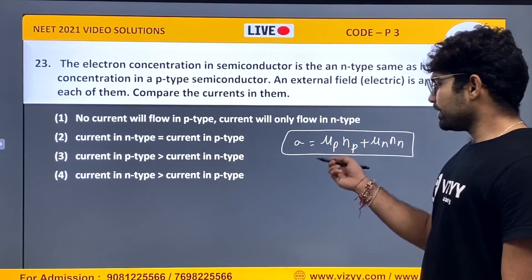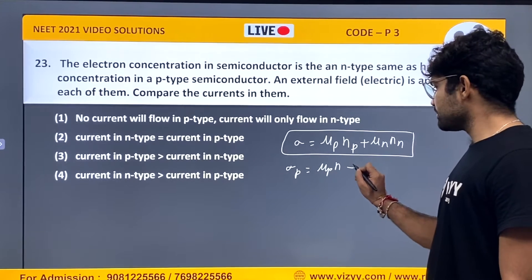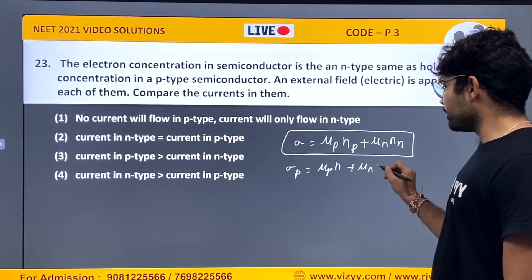And in the question, P-type, majority concentration is... Sigma for P which is equals to mu_P into N plus mu_N into minority.